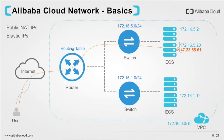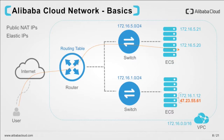There is also another kind of public IP in Alibaba Cloud called Elastic IP. It has all the properties of a public IP with the added advantage that it can be moved from one ECS instance to another. The public IP discussed earlier is fixed to the ECS instance and cannot be detached from it — if you decommission that instance, the IP would disappear. However, if you had an elastic IP, you could detach it from one instance and attach it to a new instance.